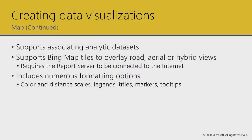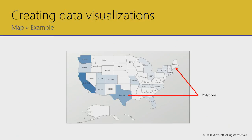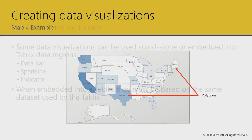Maps support associating analytic datasets so you can superimpose data over your maps using bubbles and such. There are lots of formatting options including color and distance scales, legends, titles, markers, and tooltips. Here's an example of what your map might look like — created using the map wizard — where we've used color to convey sales: the darker the color, the more sales have been achieved in that state.